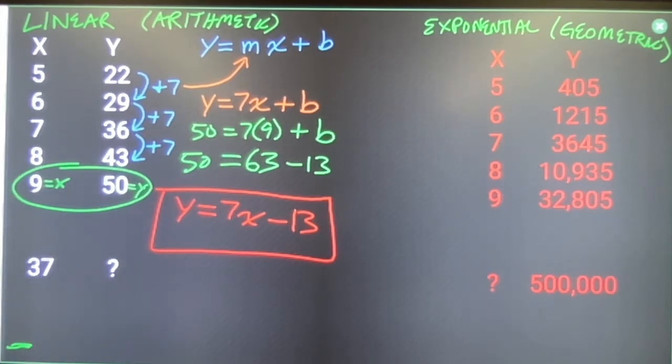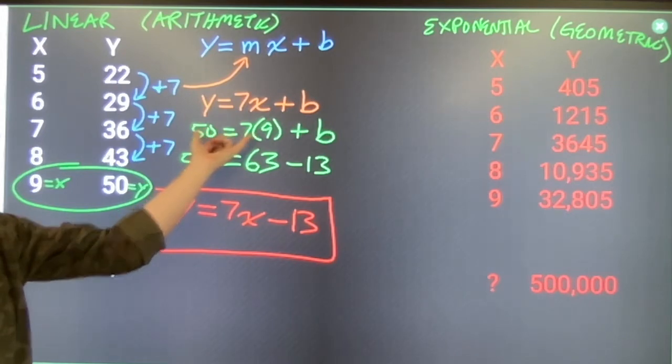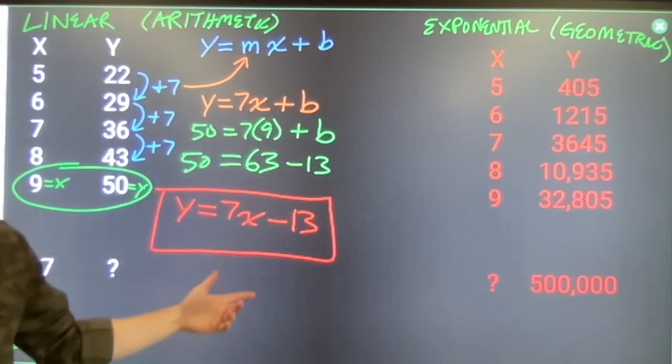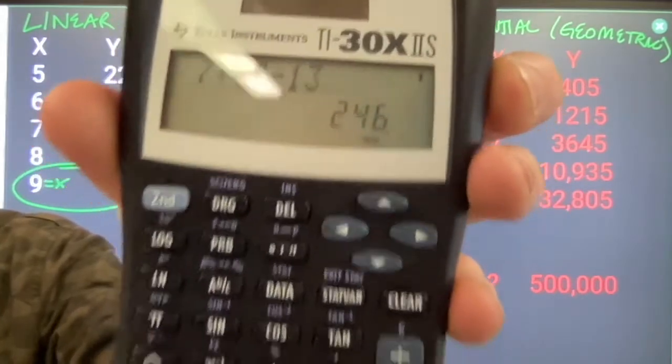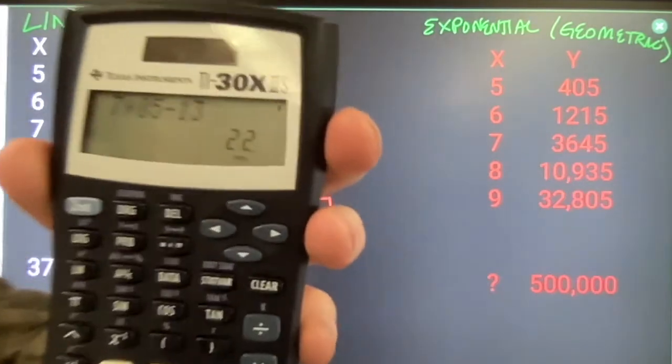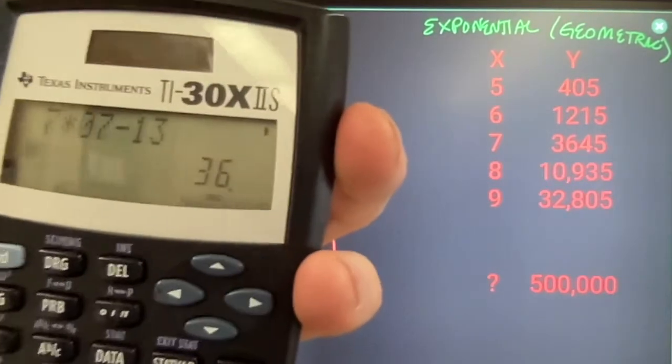That is writing a linear equation. What am I counting by? Times x. Insert values for x and y that are in my table to solve for what letter b makes this true. Then I could use this to find anything in the whole table. 7 times 37 minus 13. 246 is what y equals when x is 37. I could also check my formula if I'm not sure. 7 times 5 minus 13, make sure that it gives me the 22 that it's supposed to. Or 7 times 7 minus 13, make sure it gives me the 36 that it's supposed to.